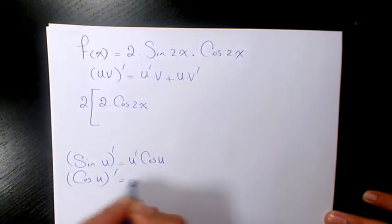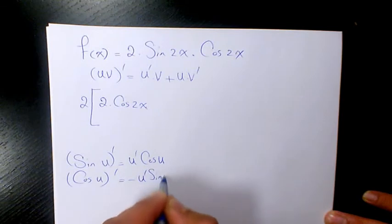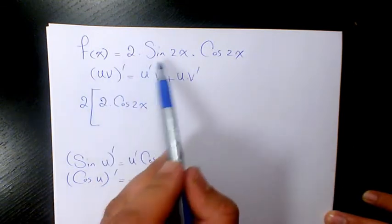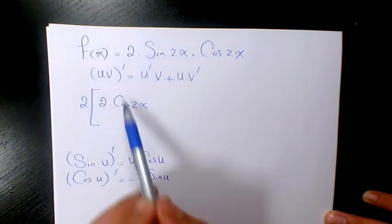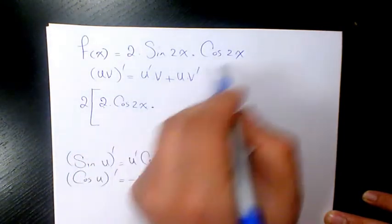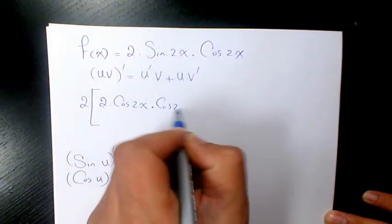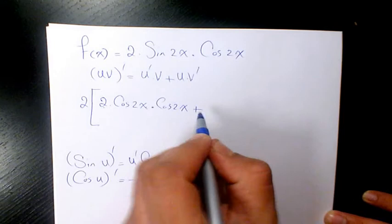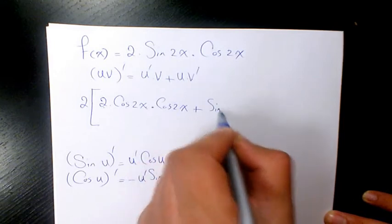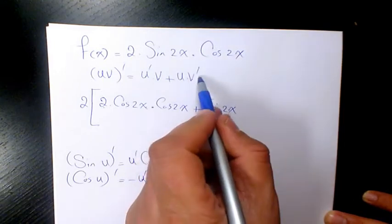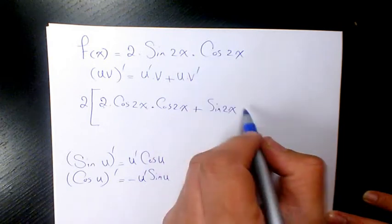So now derivative of sine 2x is 2 times cosine 2x times cosine 2x plus u which is sine 2x times v prime which is the derivative of cosine 2x that's going to be negative 2 times sine 2x.